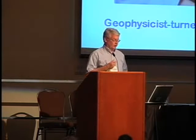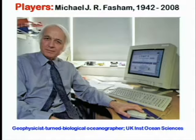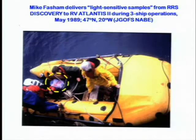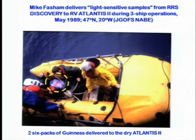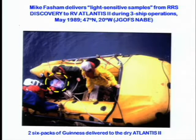So here's Mike Fasham. His wife sent me this picture — she liked this one because he has this quizzical look on his face, and this is uncharacteristic because he's wearing a tie. I also wanted to show another picture of Mike in a Zodiac. This was taken during the JGOFS North Atlantic Bloom experiment south of Iceland in 1989, where the German vessel Meteor, the UK vessel Discovery, and the American vessel Atlantis 2 all rendezvoused for a joint experiment in May. Here Mike is delivering light-sensitive important samples over to the Atlantis 2.